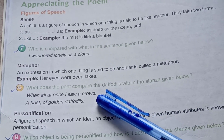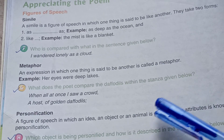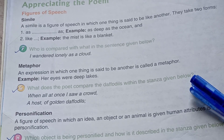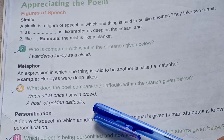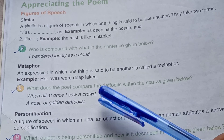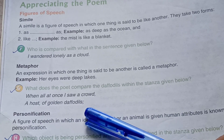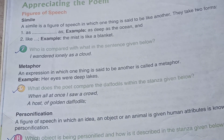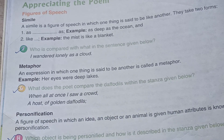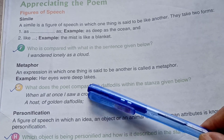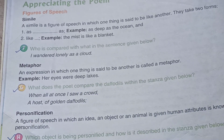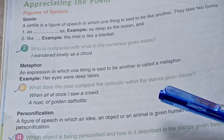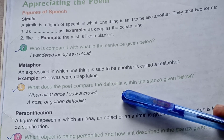Exercise G: What does the poet compare the daffodils with in the stanza given below? 'When all at once I saw a crowd.' In this stanza the poet is comparing daffodils to a crowd, because there are many daffodils beside the lake. So the poet is comparing daffodils with the crowd.